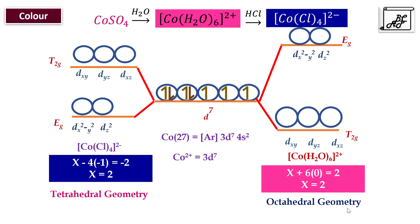When distributing the seven electrons in the octahedral case — since H₂O is a weak ligand — there are three unpaired electrons. Similarly, in [CoCl₄]²⁻ there are also three unpaired electrons. So the number of unpaired electrons is the same in both cases. However, in octahedral complexes the splitting between T2g and Eg is larger, whereas in tetrahedral complexes the splitting between Eg and T2g is smaller. This difference in crystal field splitting is one reason why the colors of the two compounds differ.